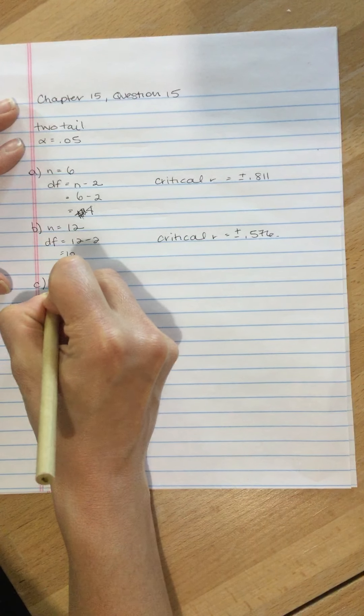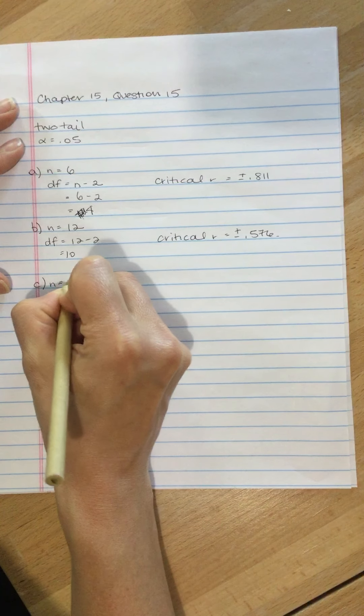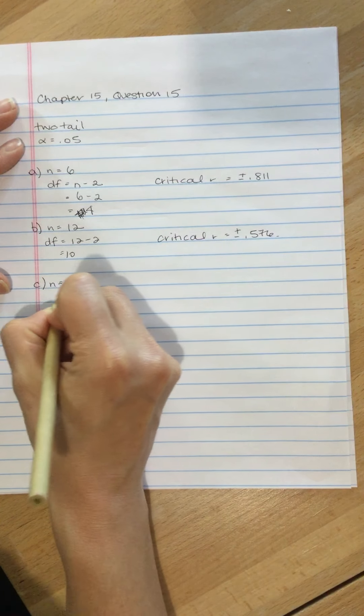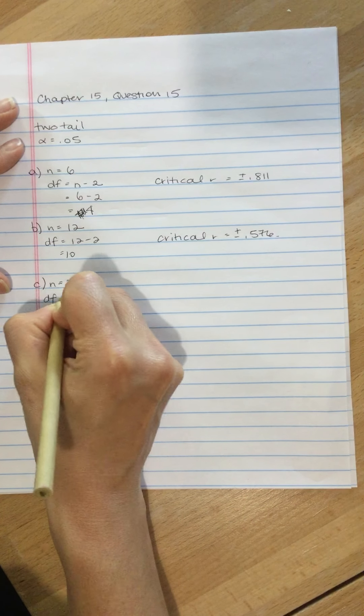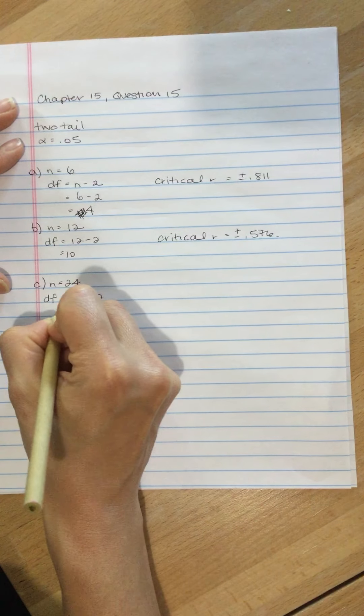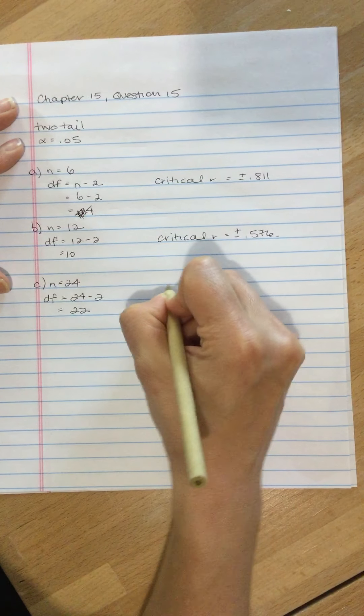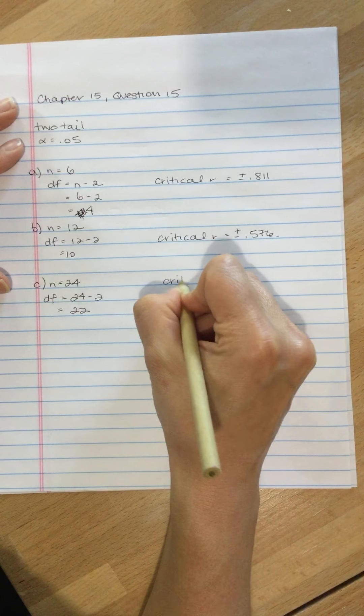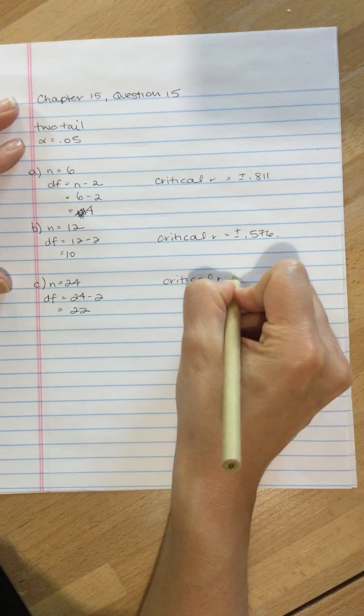C, the n is 24. So our degrees of freedom, 24 subtract 2, and degrees of freedom is 22. And let's go look up what that critical R is going to be.